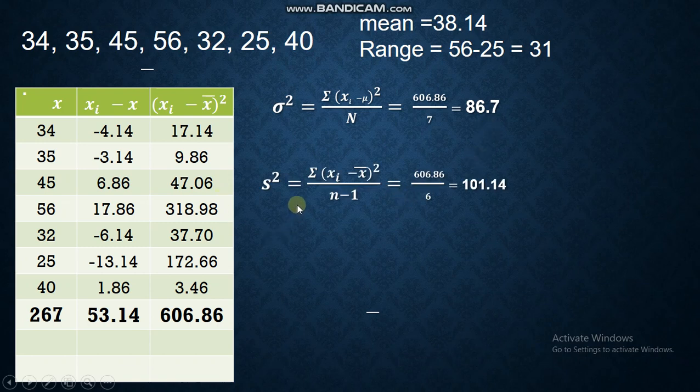Let's have the sample variance. The sample variance is this one. Now, why is this 6? Very good. It is stated here. It's n minus 1. So, your 7 minus 1, that is 6. So, you divide this. 606.86 over 6 is 101.14.